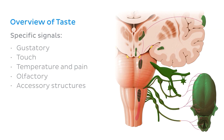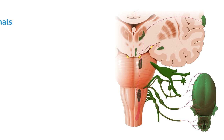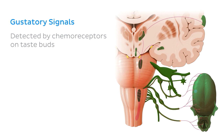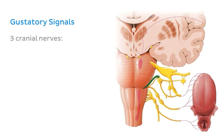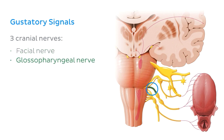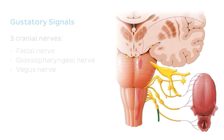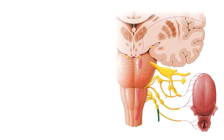Gustatory information is detected by chemoreceptors on taste buds. Taste buds exist on taste papillae in the oral cavity, and gustatory sensation is transmitted through three cranial nerves: the facial nerve, cranial nerve 7; the glossopharyngeal nerve, cranial nerve 9; and the vagus nerve, cranial nerve 10. Through these nerves, signals reach the brainstem where they synapse and are relayed to three main areas of the brain, and we're going to go through these now in a little bit more detail.